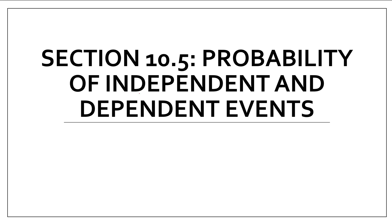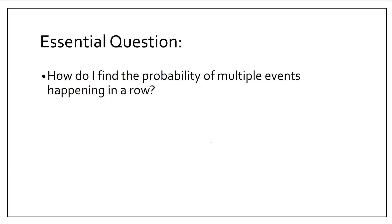Alright, the next probability section. Today we're going to be discussing independent and dependent events. Our central question is: how do I find the probability of multiple events happening in a row? In 10.4 we looked at events that were overlapping, but today we're going to look at multiple events that are happening in a row — not necessarily overlapping, but happening one after the other.